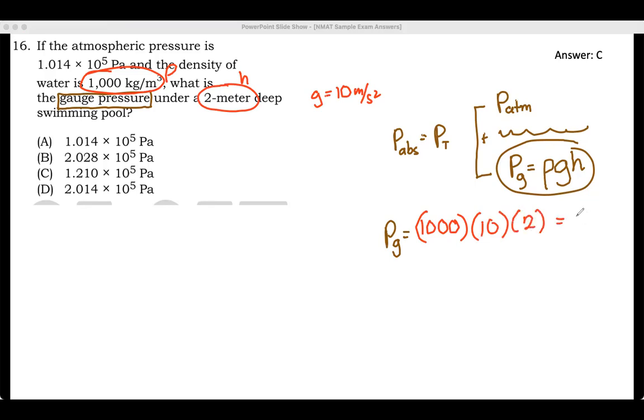Now that would be solved to 2 and 4 zeros, 20,000 pascals. This is what we call the gauge pressure. But if you can see, that would be 2 × 10^4 pascals.